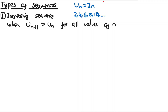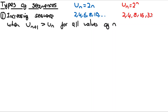Another type of increasing sequence specifically mentioned on the spec is u_n = 2^n. Substituting values of n starting from 1 gives 2, 4, 8, 16, 32, and so on. This is an increasing sequence because the terms keep getting bigger.